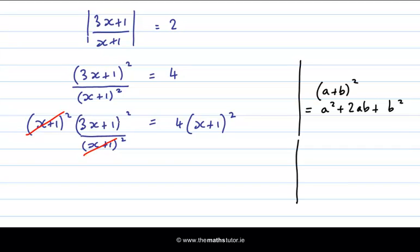So when we square 3x plus 1, we square 3x and we get 9x squared. And then we have 2ab, which is twice 3x times 1. So we could write that as twice 3x times 1. And then we square the last term, which is 1 squared.